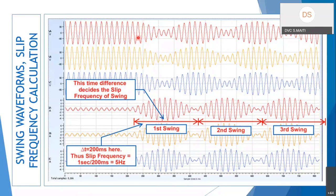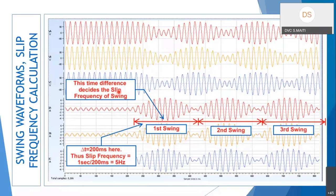This picture of a generated power swing from a test kit is important. The slip frequency is the cyclic envelope frequency of the variation — not the 50 Hz power system frequency. From the diagram, the time between envelope peaks is 200 ms, so the slip frequency is 1 second divided by 200 ms, equal to 5 Hz. The time difference of the envelope maximum and minima gives the slip frequency.